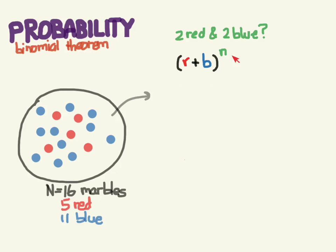To use the binomial theorem, you need two independent events. Here, our two independent events are pulling a red marble and pulling a blue marble. The little n represents how many marbles in total we're going to pull out — we said four, so we replace n with four. I'm not going to ask you to multiply polynomials to the fourth power. There's a shortcut, but first we need to get a little bit geeky.